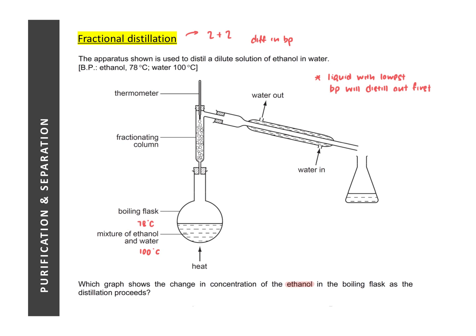In this case, the question is asking you how would the concentration of ethanol in the boiling flask change as distillation proceeds. If you look at the mixture, ethanol is the first liquid to be distilled. So over time, in the boiling flask, we are going to get less and less of ethanol. So essentially as time proceeds, the concentration of ethanol will decrease and decrease and eventually reaches zero.